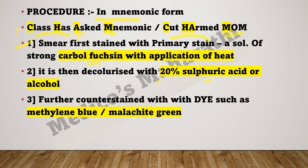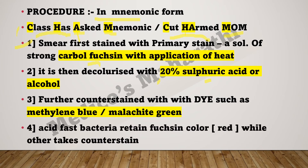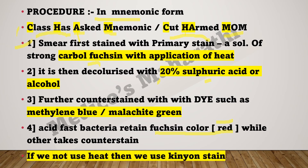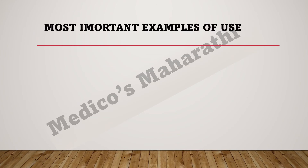In the end, acid-fast bacteria retain the fuchsin color, which is red, while other bacteria take up the counter stain. An important star point: if we do not use heat, then we use Kinyon stain instead. So if heat is not applied, the stain used is Kinyon stain.